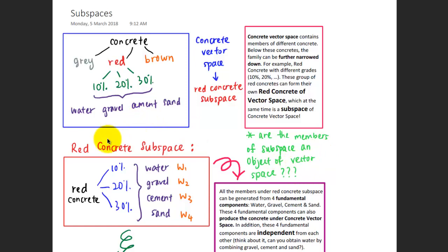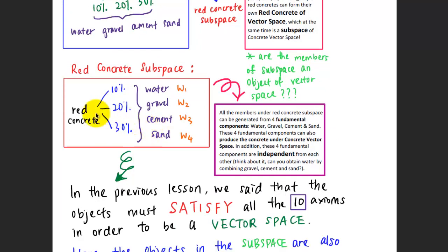Now let's look at the red concrete subspace, which has members of 10% red concrete, 20% red concrete, and 30% red concrete. All the members here can be formed from four components: water, gravel, cement, and sand. All members under the red concrete subspace can be generated from these four fundamental components.